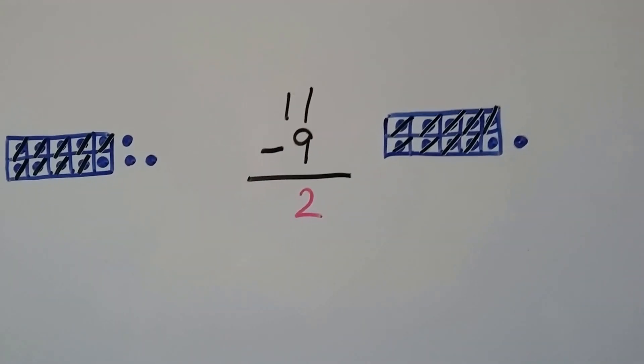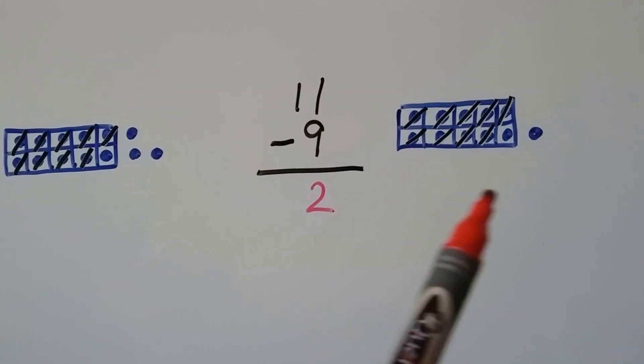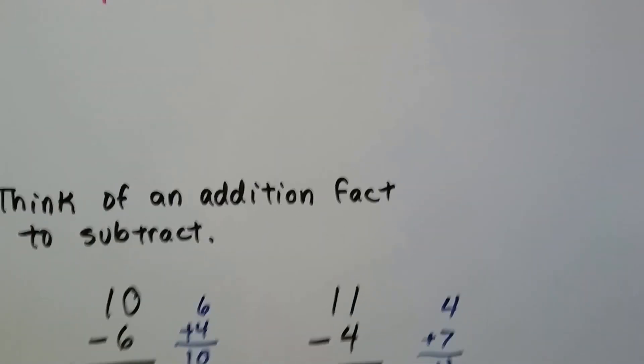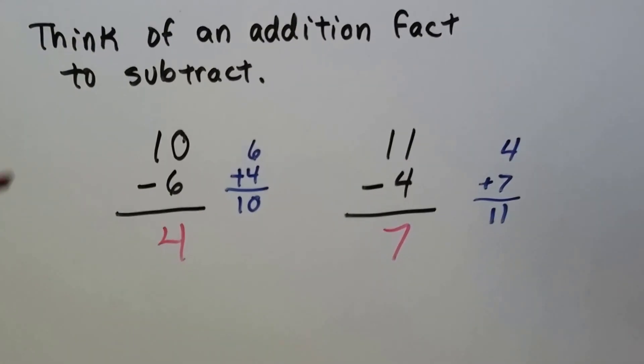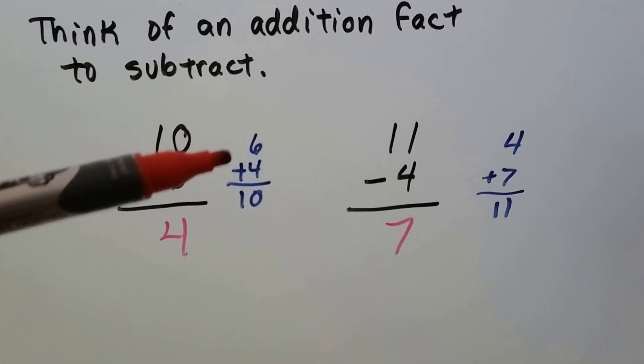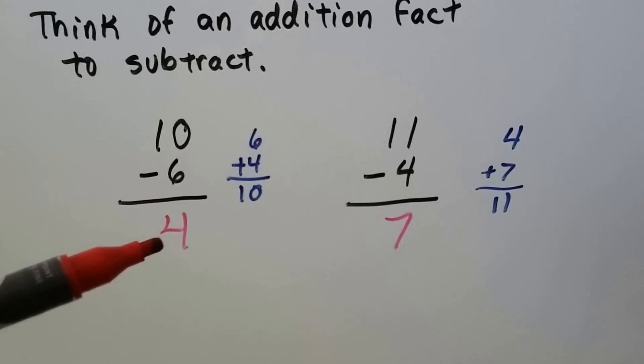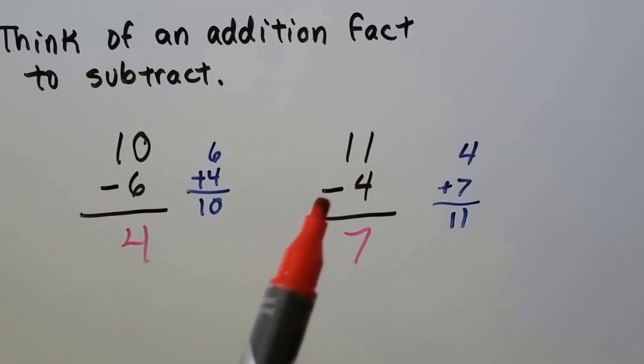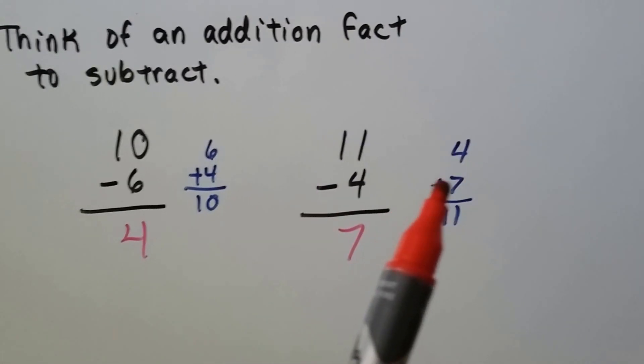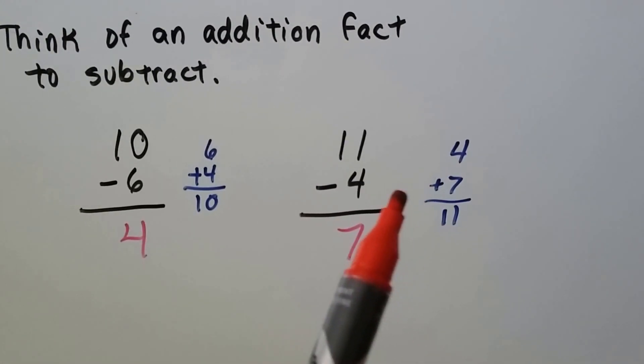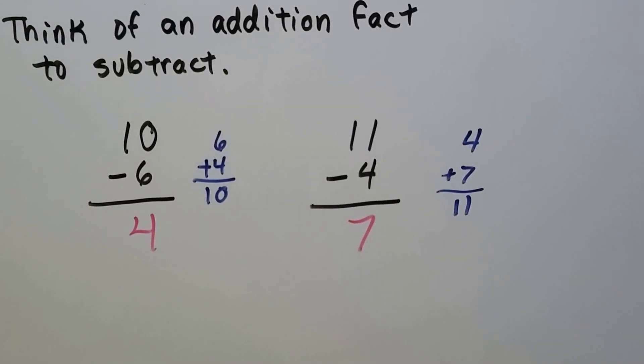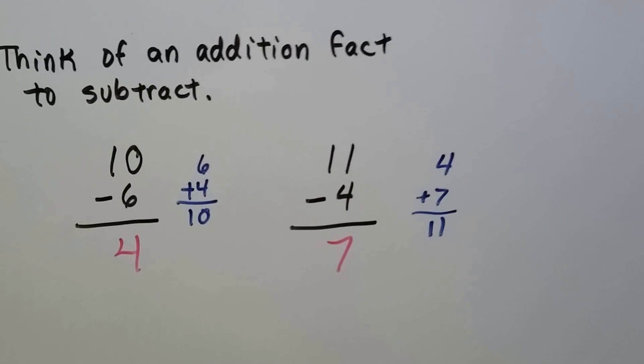And we can think of an addition fact to subtract. For 10 minus 6, we think 6 plus 4 is 10. The missing related fact is a 4. 11 minus 4, we think that 4 plus 7 is 11, and the missing related fact is a 7. So 11 minus 4 equals 7.